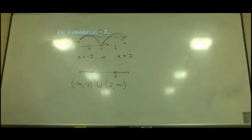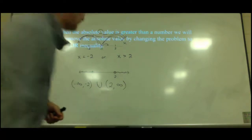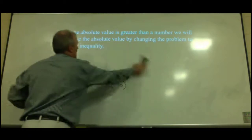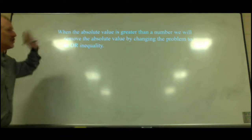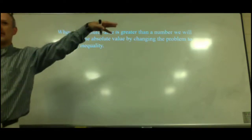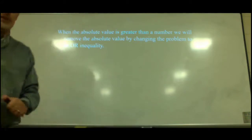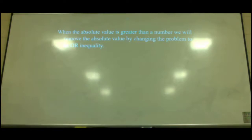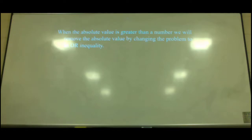With absolute values, you either have the outsides or you have the middle — there are no other options. When the absolute value is greater than a number, we remove the absolute value by changing to an or inequality covering the two outside sections. This first example goes with the or.